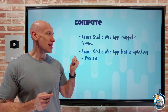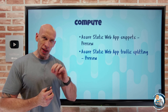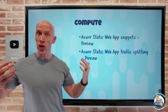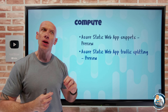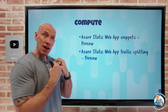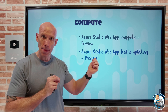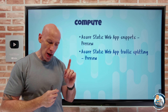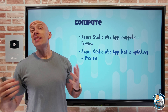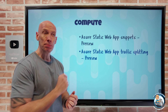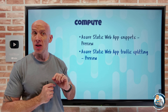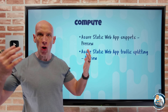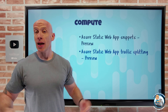Azure Static Web Apps have also added traffic splitting capabilities. I can have an alternate branch environment — maybe for a next version or a feature I'm working on — in addition to the production environment. Providing I'm using the standard hosting plan, I can say 60% of traffic goes to production, 20% to this branch environment, 20% to another branch environment, and I can modify those. So it's great for A/B testing scenarios or rolling out in controlled environments.